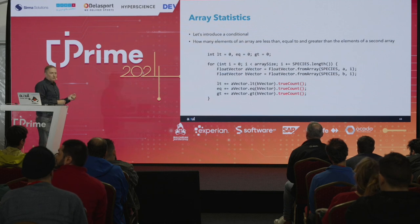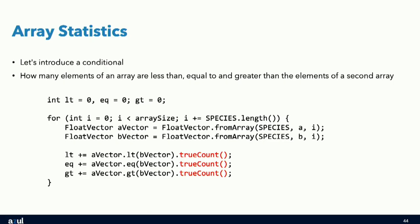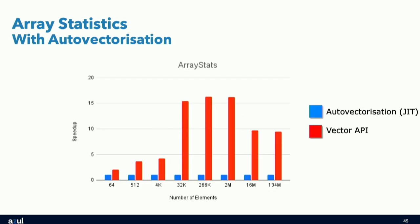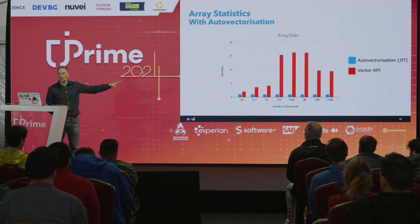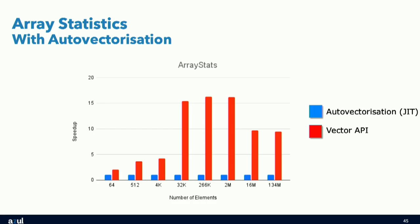Where the Vector API really wins is with more complex cases like conditional operations. For example, testing whether a number is less than, equal to, or greater than a value and counting results — with auto-vectorization the JIT doesn't come close to the explicit Vector API. Looking at the generated code, HotSpot doesn't use vector operations in that case and only does 2-element loop unrolling, while Azul's JIT compiler does use AVX2 instructions and auto-vectorizes. Our JIT compiler recognizes more situations where vectorization can be applied.